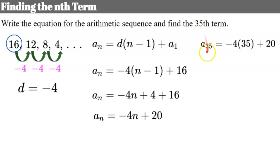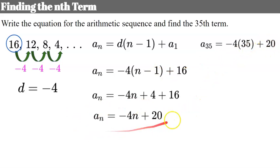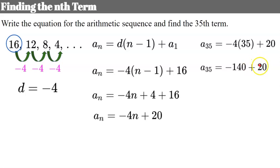Now we find the 35th term: a subscript 35 equals negative 4 times 35 plus 20. Note that (35 minus 1) equals 34, which is where the n minus 1 came into play before simplification. Negative 4 times 35 is negative 140; add 20 and the 35th term is negative 120. Writing it in slope-intercept-like form makes it easy to evaluate any term, with a common difference of negative 4.